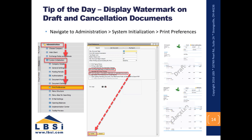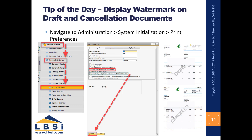Tip of the day: Display watermark on draft and cancellation documents. If a marketing document is added in error, has become invalid, or has no concrete transactions associated with it, you can cancel it or save it as a draft and still store it in the database. To have watermarks when printing these documents, navigate to Administration, System Initialization, Print Preferences. In the General tab, check 'Print Draft Watermark on Draft Documents' and 'Print Cancelled or Cancellation Watermark on Applicable Documents,' then click Update to save.